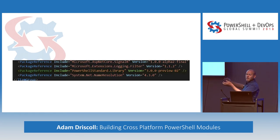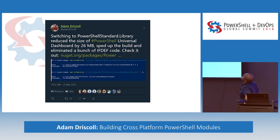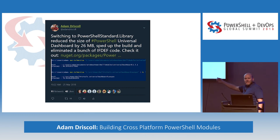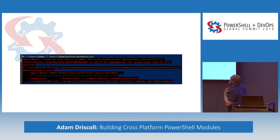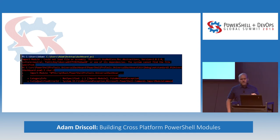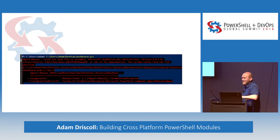Then came the PowerShell Standard Library - one binary instead of two! It reduced the module size by 26 megabytes, sped up the build, and eliminated all the `#ifdef` code. I was super excited - until I actually tested it and started running into assembly load problems.